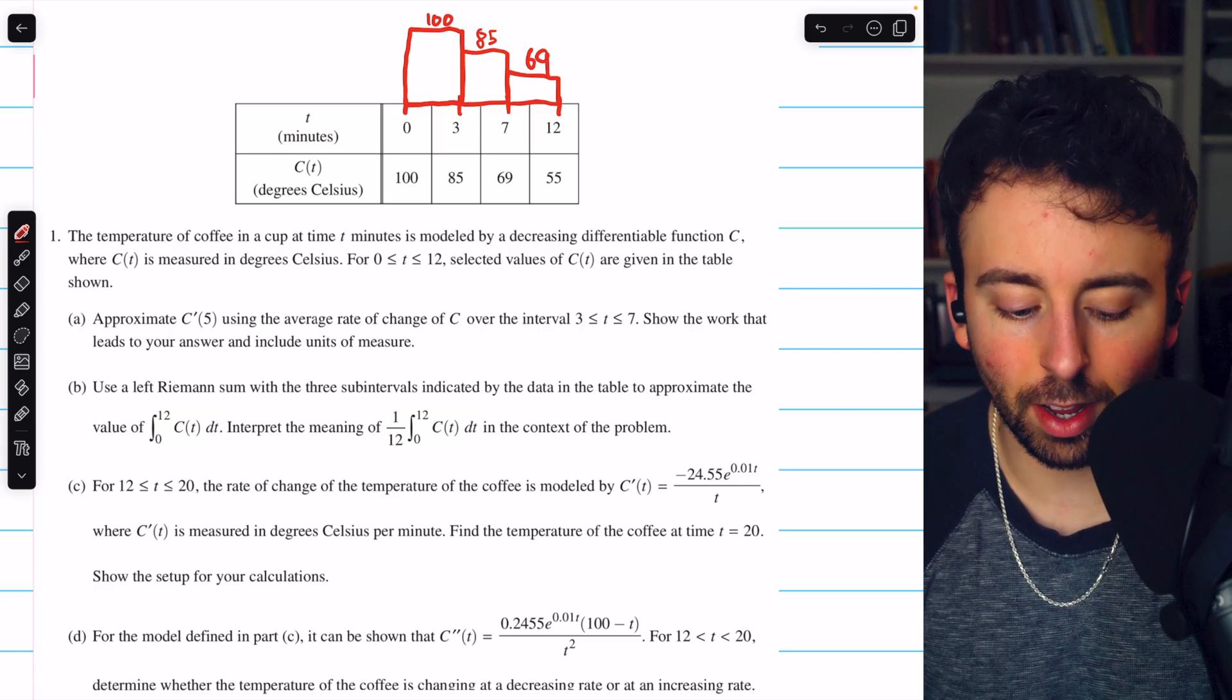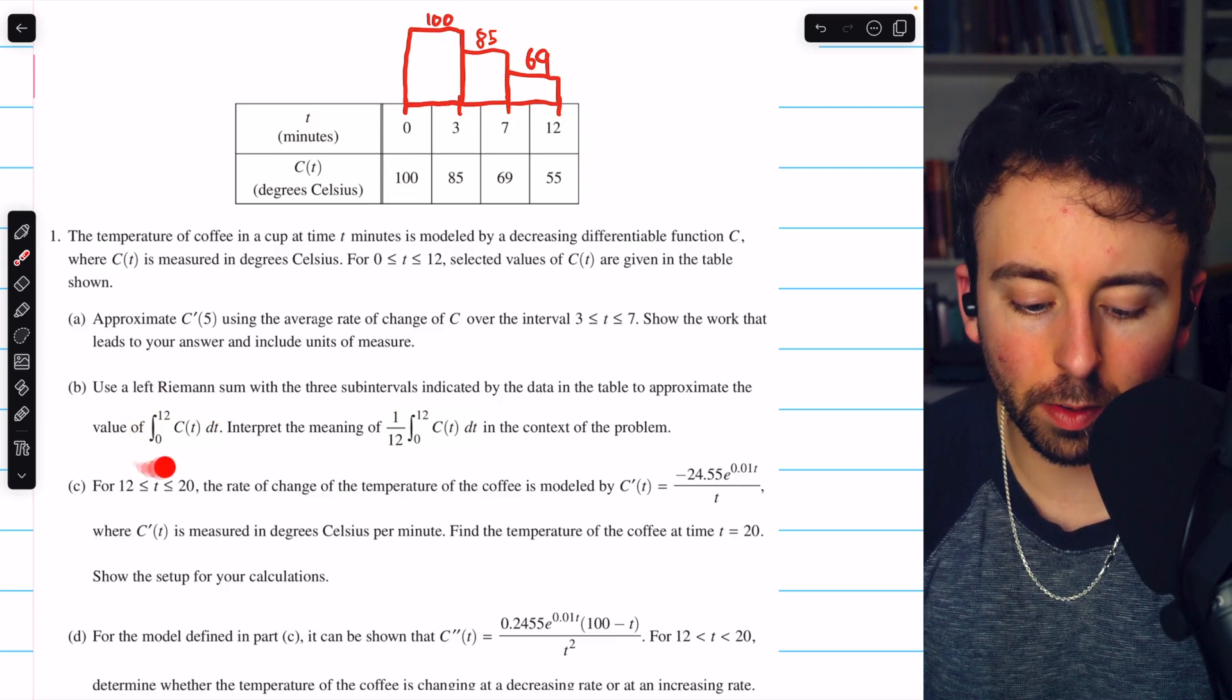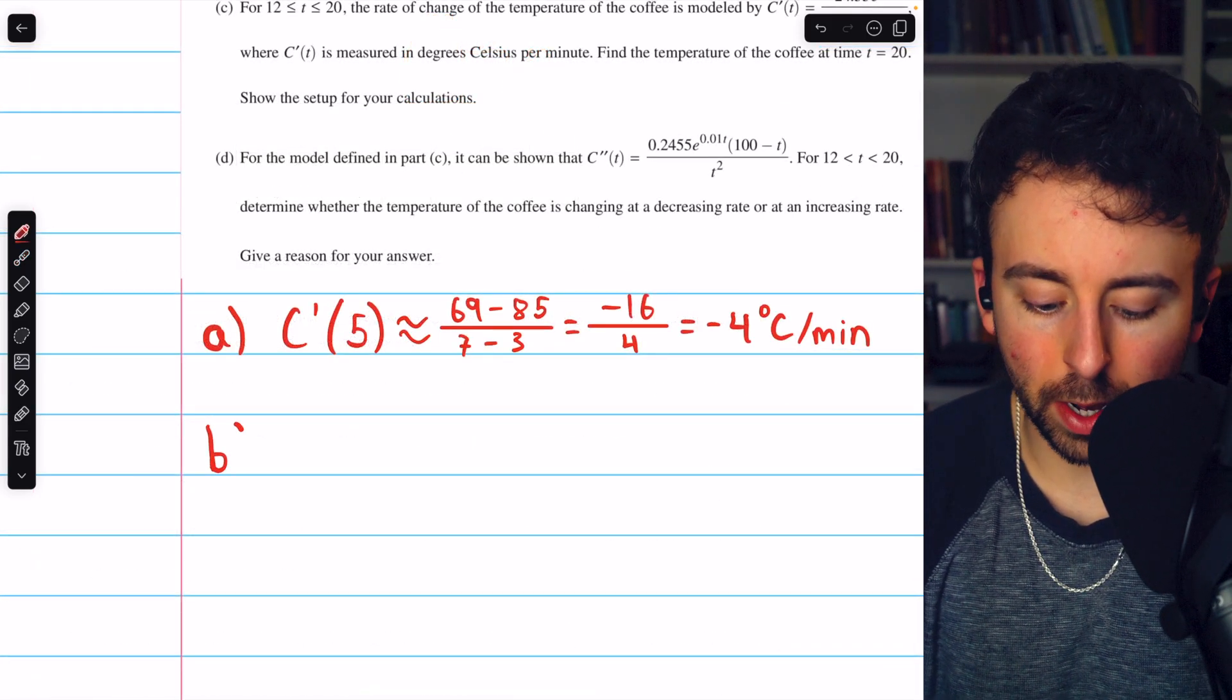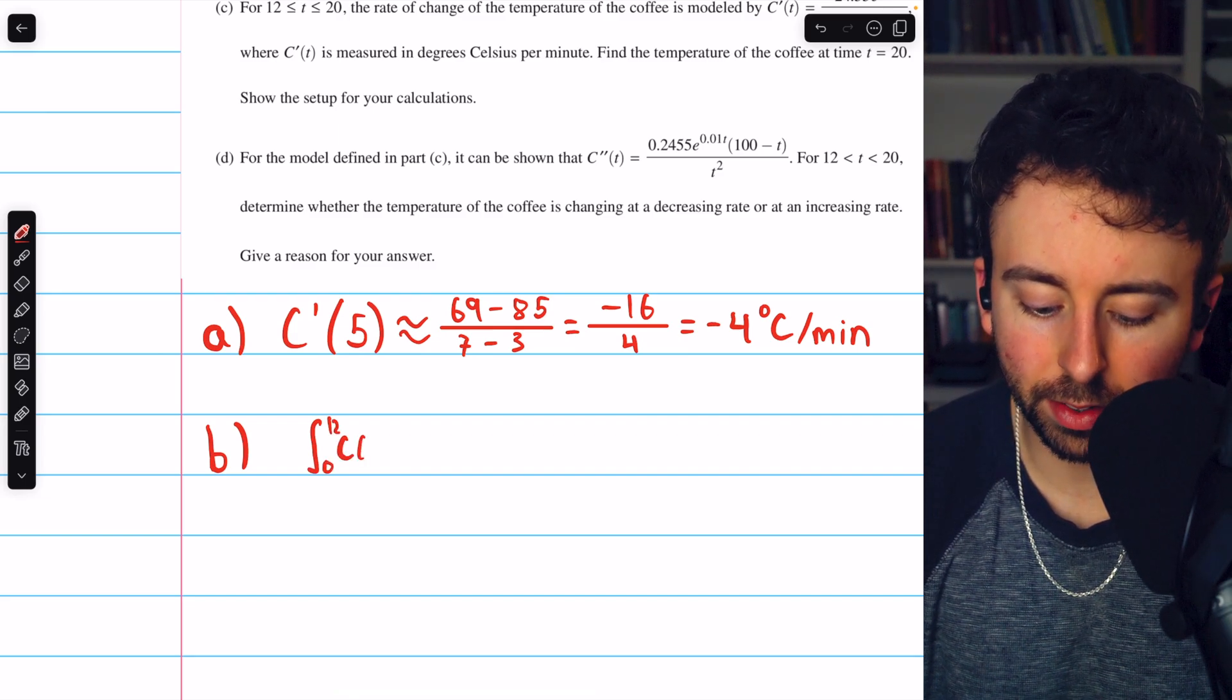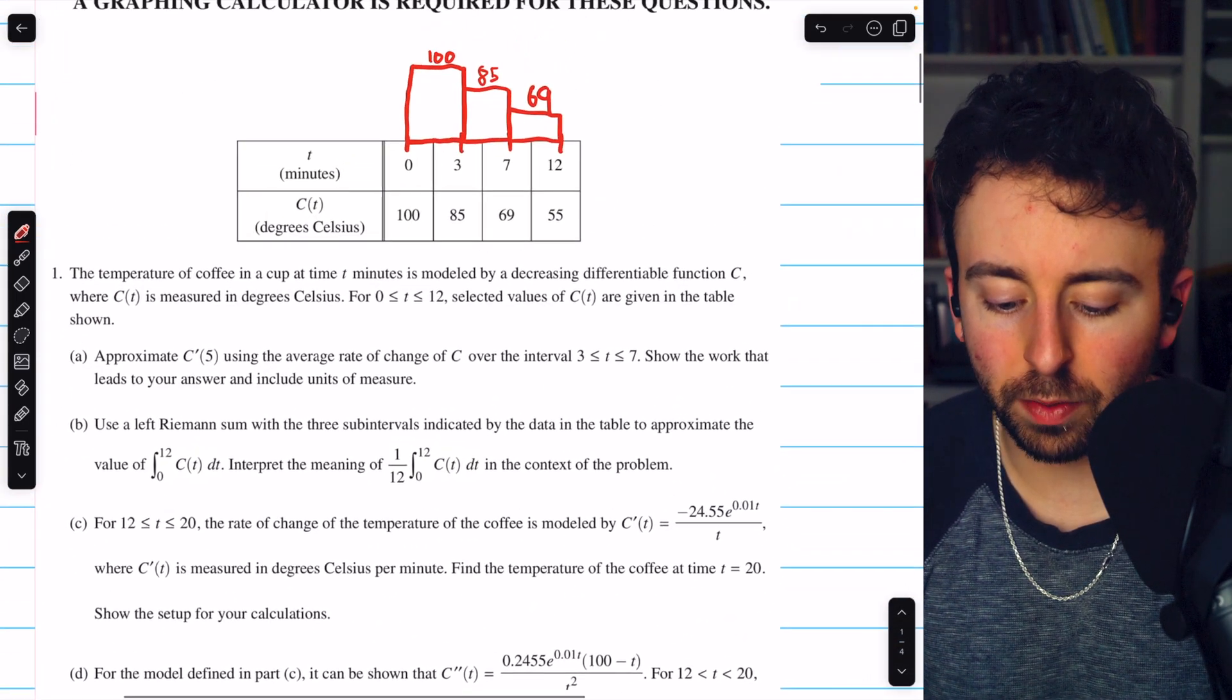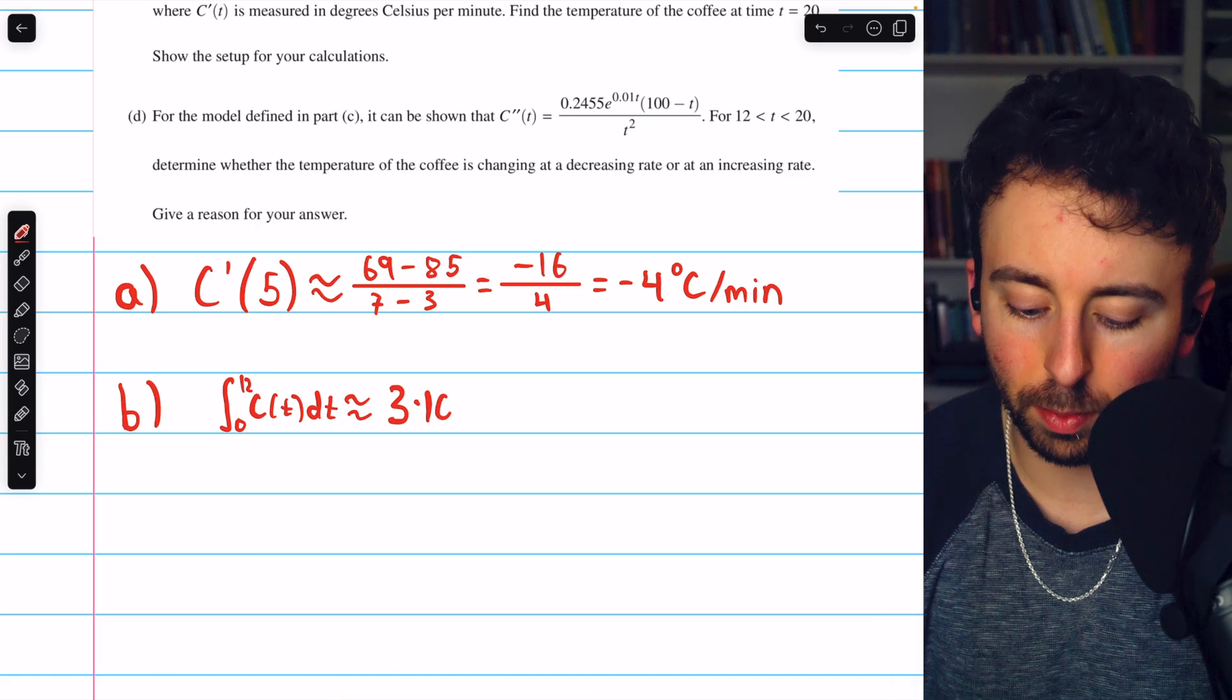Using this Riemann sum, adding up the areas of these three rectangles, we will have an approximation of the integral of c of t from 0 to 12, an approximation of the area under the curve. So coming down here to write part b, the integral from 0 to 12 of this temperature function, c of t dt, is approximately the sum of the areas of these rectangles. The first rectangle has a base length of 3 and a height of 100, so 3 times 100.